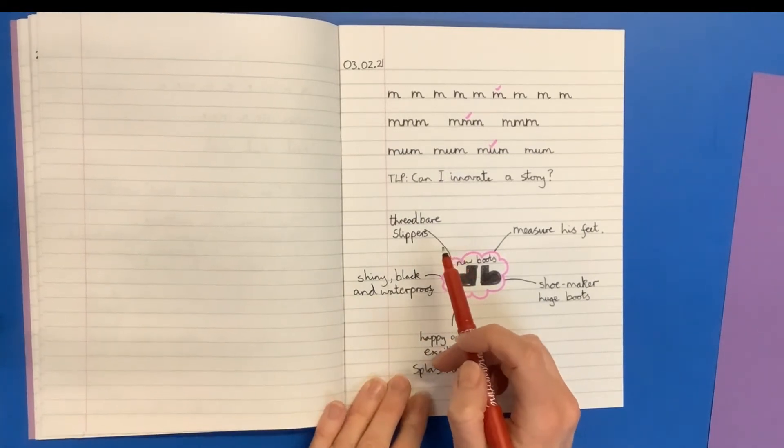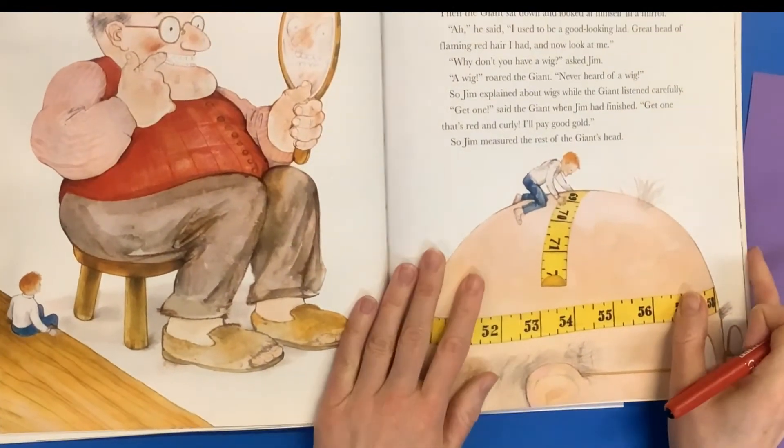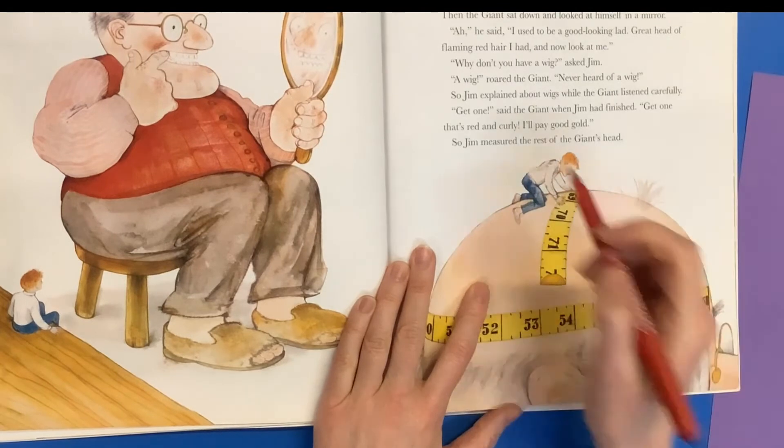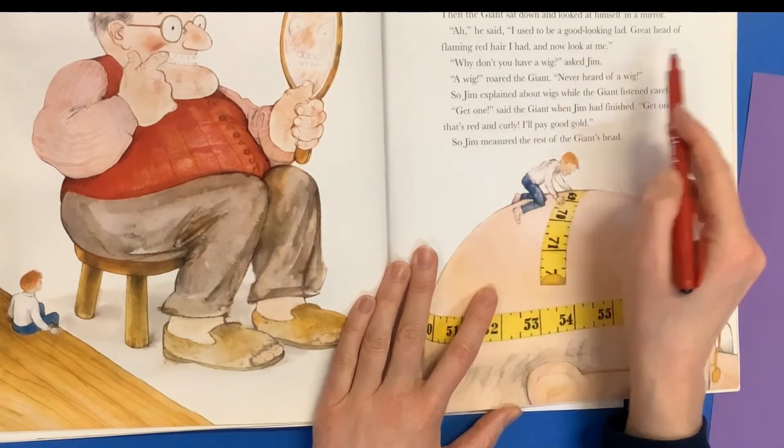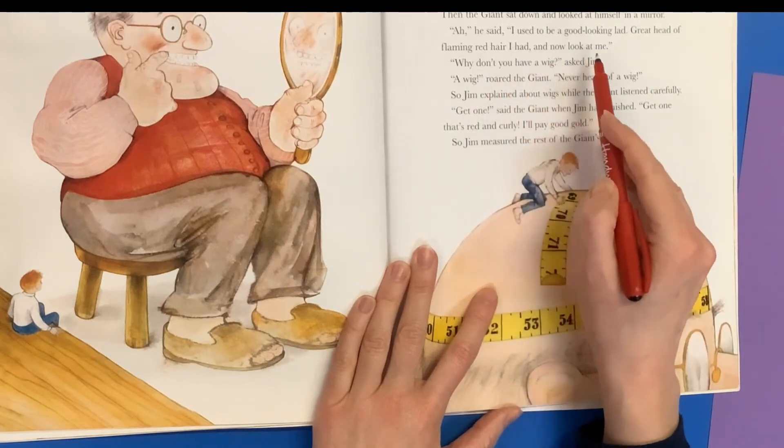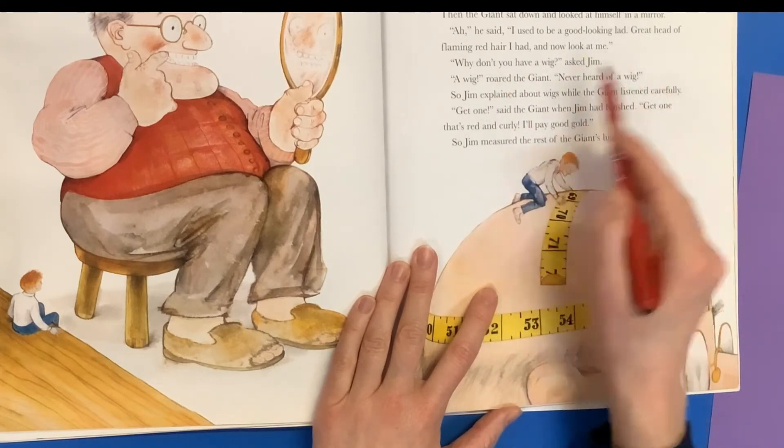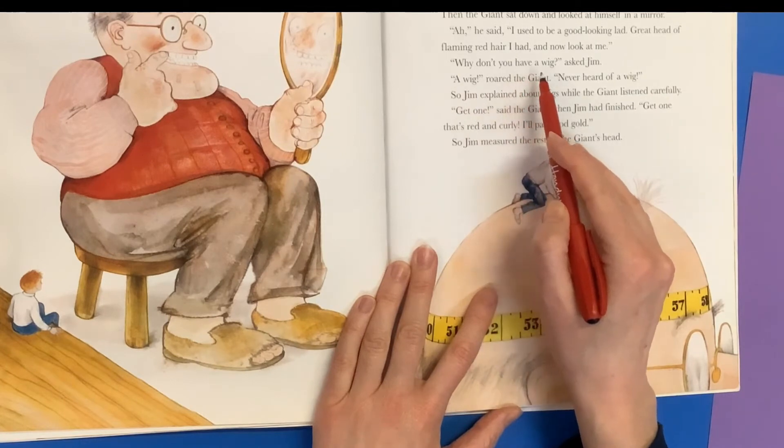So what did he have to measure? Let's have a look here. So if we take the boots as an idea, he could say, I used to love running around outside the castle, splashing in the puddles. But now I can't. My feet get wet.